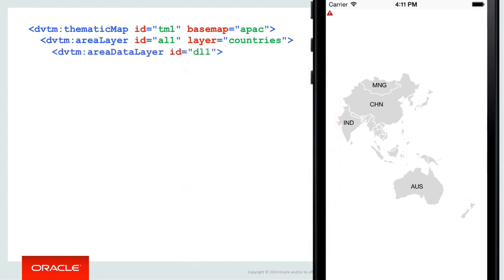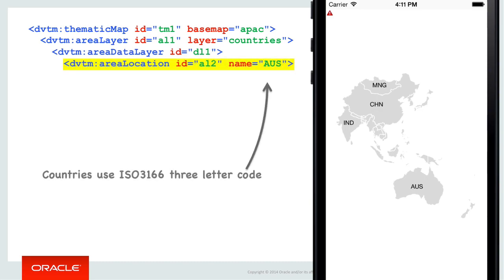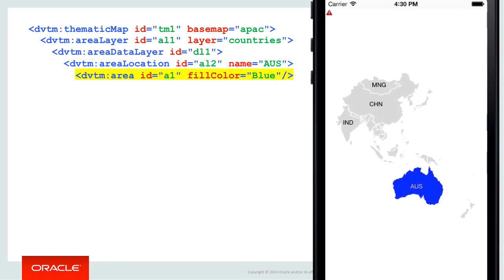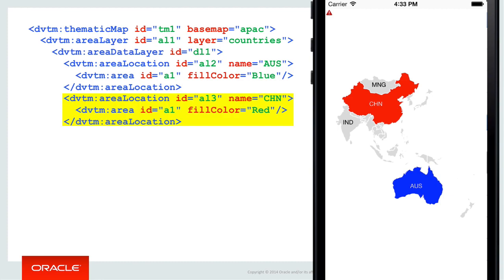Once we've picked the layer, we can then define what data we want to show via an area data layer tag. The area data layer tag supports a number of area location tags where you can pick out specific named locations of the map and apply styling. In this example, I've specified Australia with the AUS code — all countries are defined by the ISO 3166 three-letter code. If we were alternatively showing the USA base map and its states layer, the states are defined in the area location tag with a two-letter code. Given we've selected Australia, we can add the area child tag which allows us to individually stylize that location — in this example, using a simple blue fill to highlight Australia. I've extended the example to color China red as well.